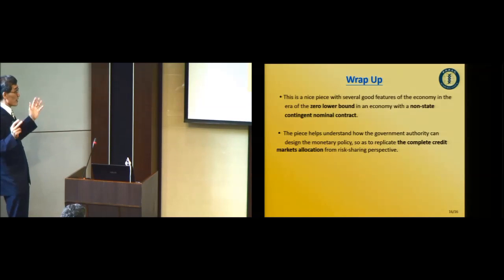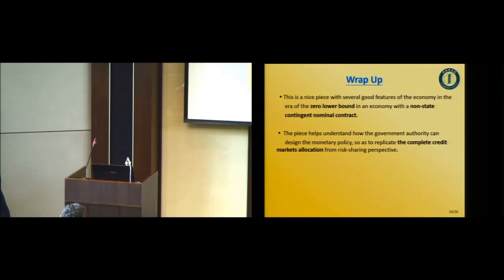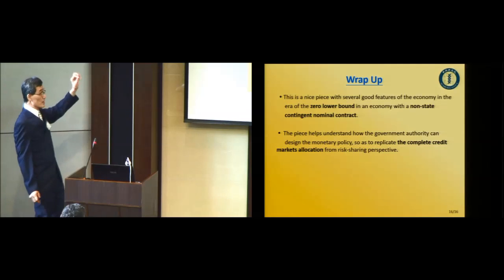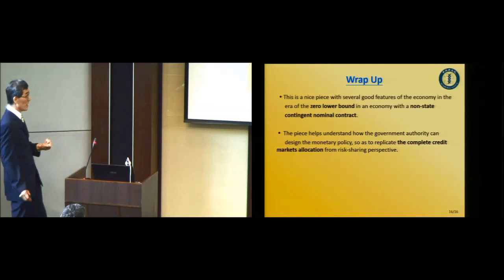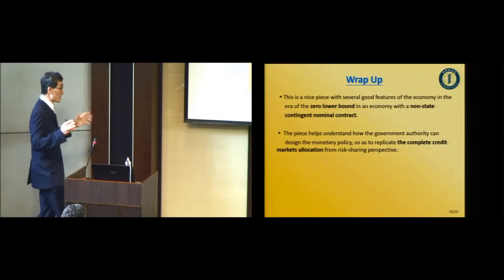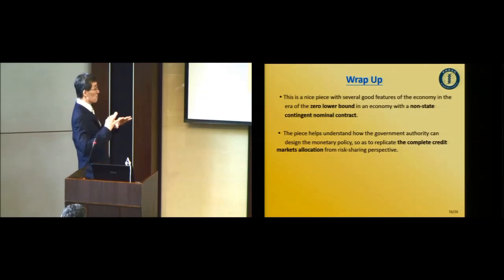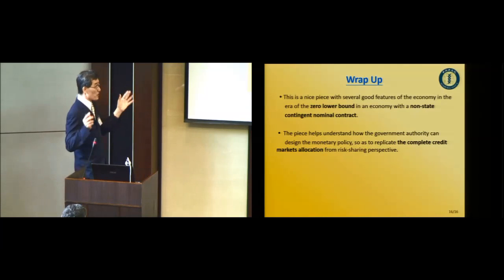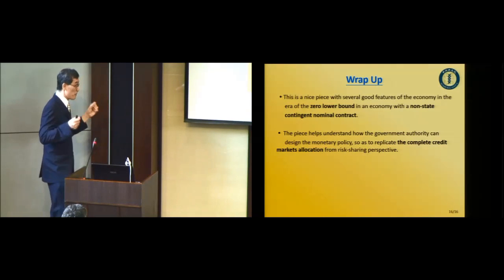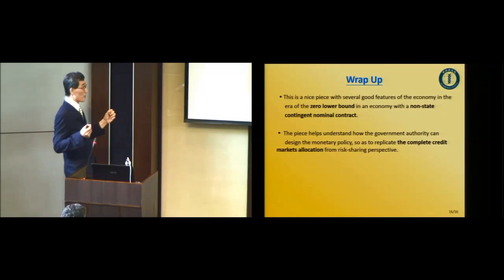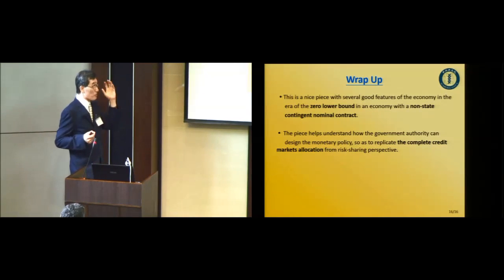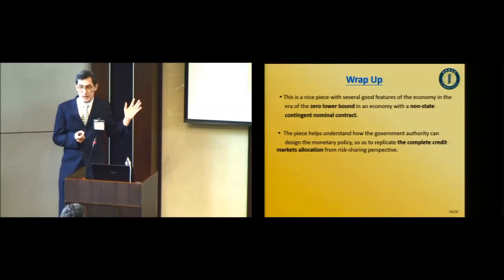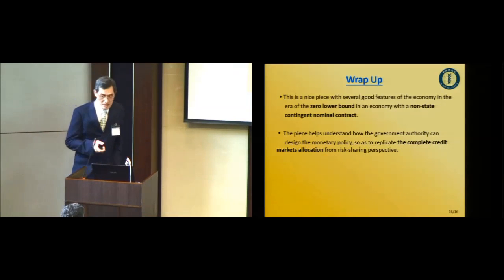If labor productivity is endogenous, I'm not sure whether the nominal GDP targeting policy would still work, because then the shock would not be a big negative shock, and you actually don't need to rely on this nominal GDP targeting policy. But probably some more work needs to be done on this aspect. To wrap up: this is a nice piece of paper with a very good future, studying the economy in the era of zero lower bound and the long-lasting conditions. The paper helps us understand many issues, especially regarding complete credit market allocation from a risk-sharing perspective.